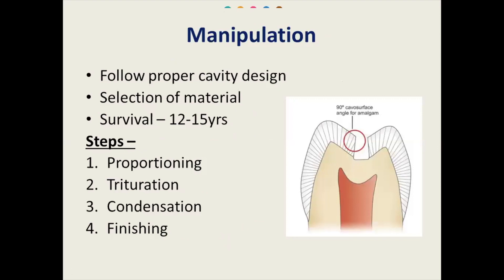Moving to the manipulation steps. Before manipulation you will have to prepare the cavity — class 1, class 2, or buccal pit — following proper cavity design principles and selecting the material according to the site of restoration. If both these steps are done correctly, the survival of silver amalgam is very high, about 12 to 15 years or more. The manipulation steps are: proportioning, trituration, condensation, and lastly finishing and polishing.